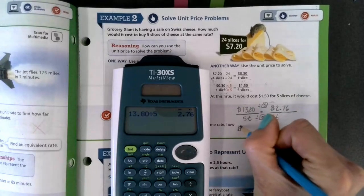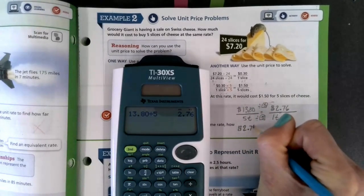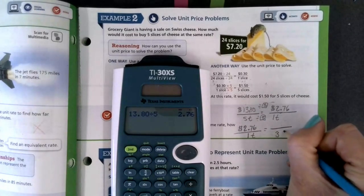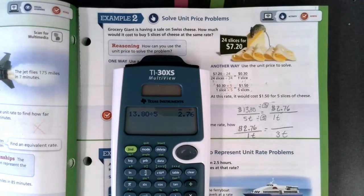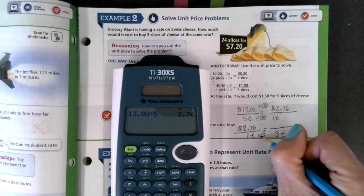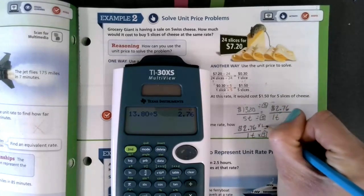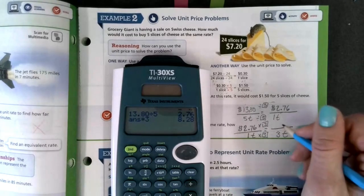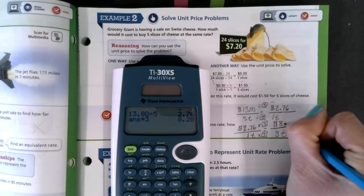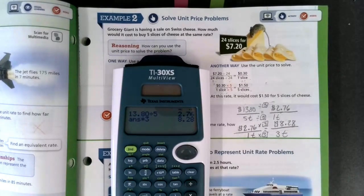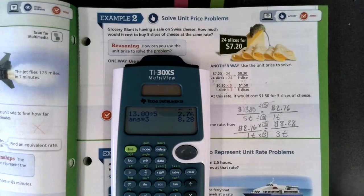Now that I know the cost per one ticket, $2.76 per one ticket, we can use that to find the cost for three tickets. So when I set it up, I know one times three will get me to three. So I need to do the same thing on top. So I'm going to take that $2.76 times three, and I get an answer of $8.28. So now I know the cost for three tickets at that rate would be $8.28.